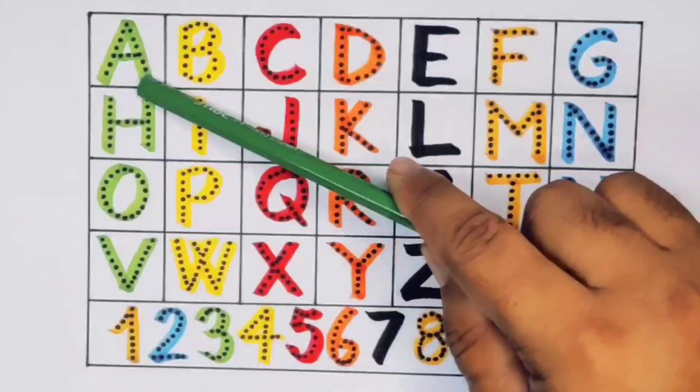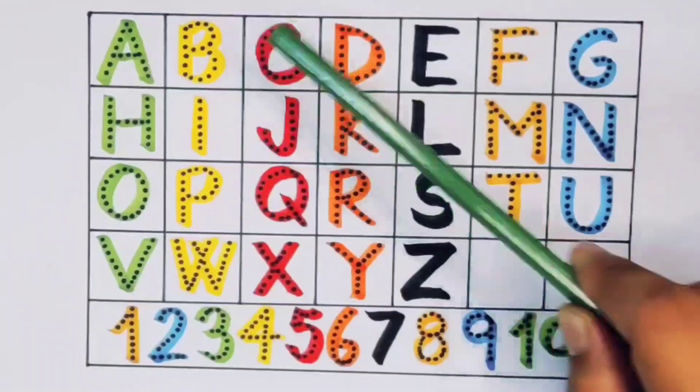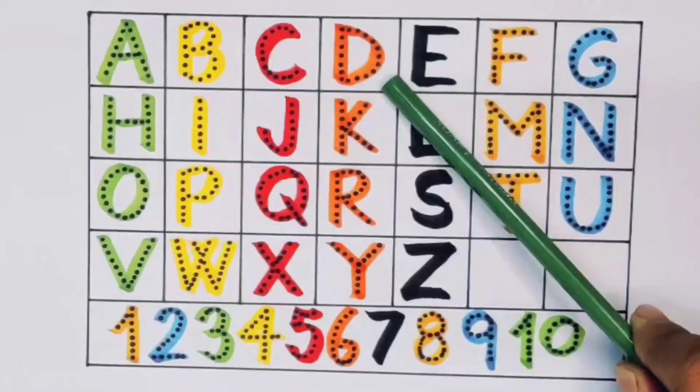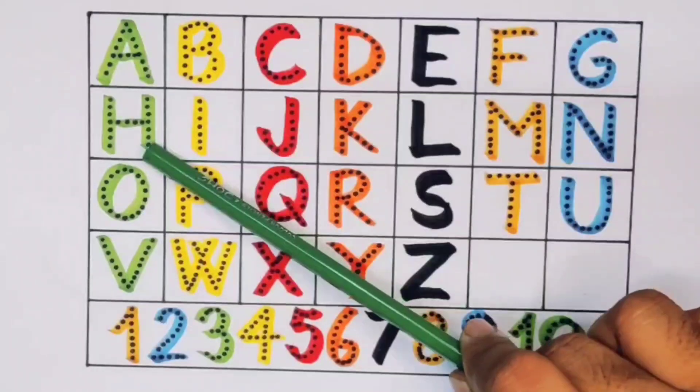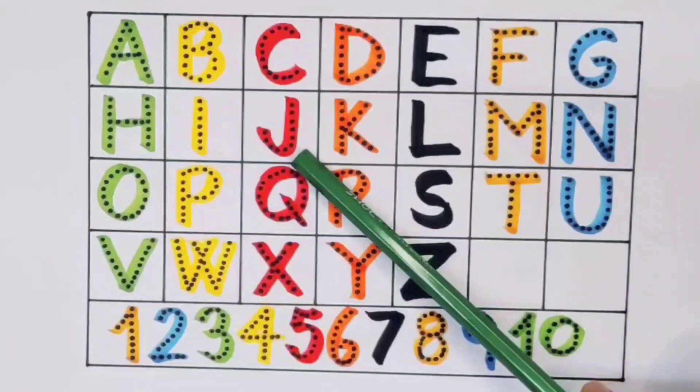We learn A for Alligator, B for Ball, C for Caterpillar, D for Doctor, E for Elephant, F for Fish, G for Goat, H for House, I for Ice Cream, J for Jam.